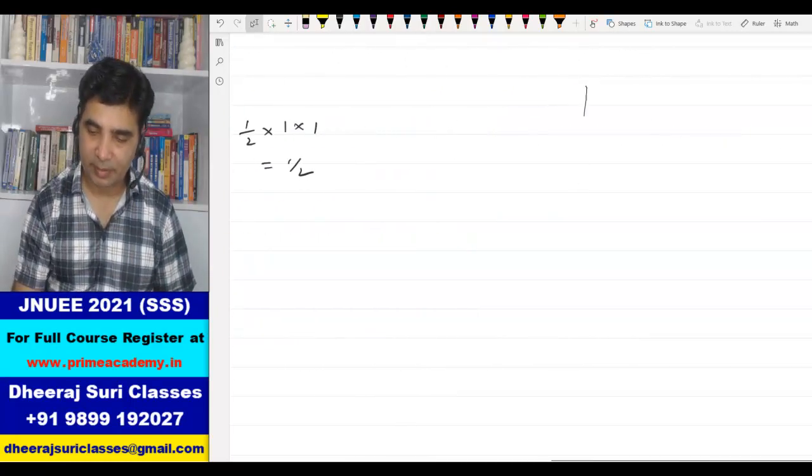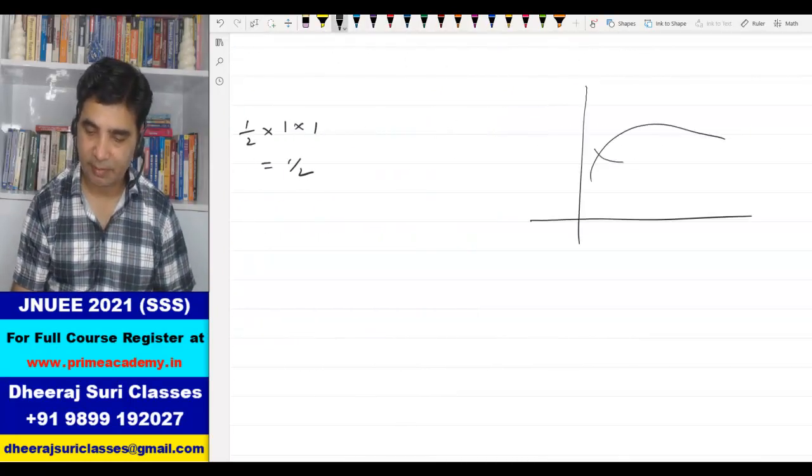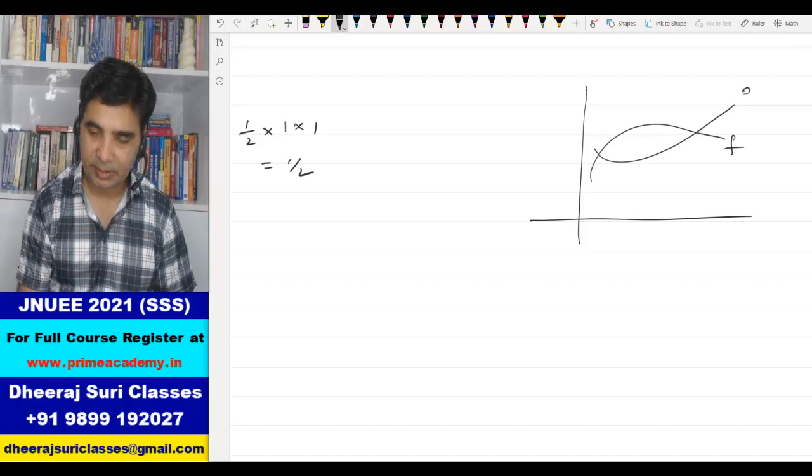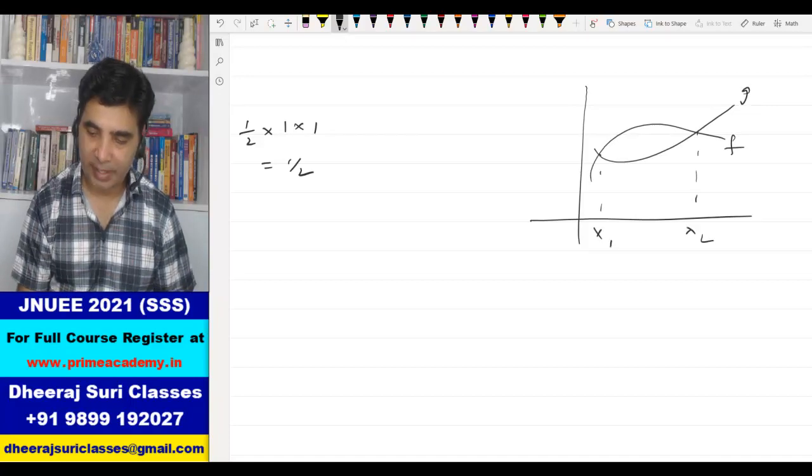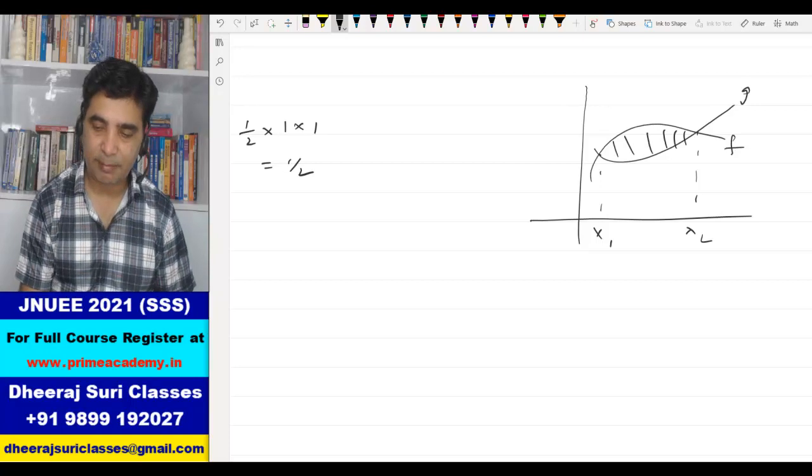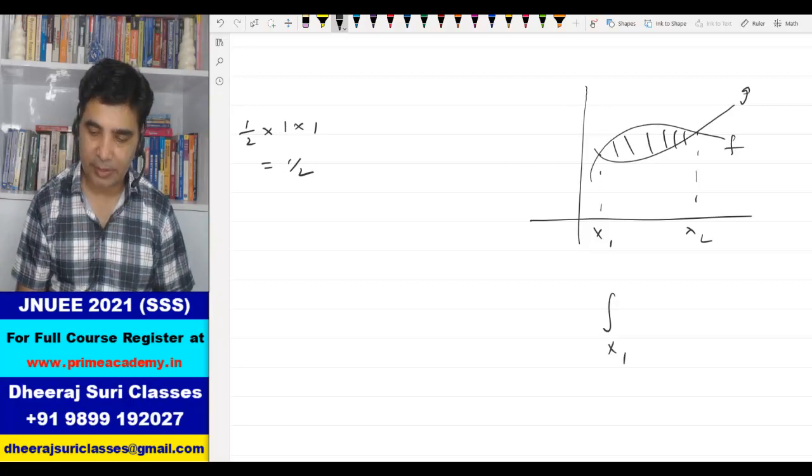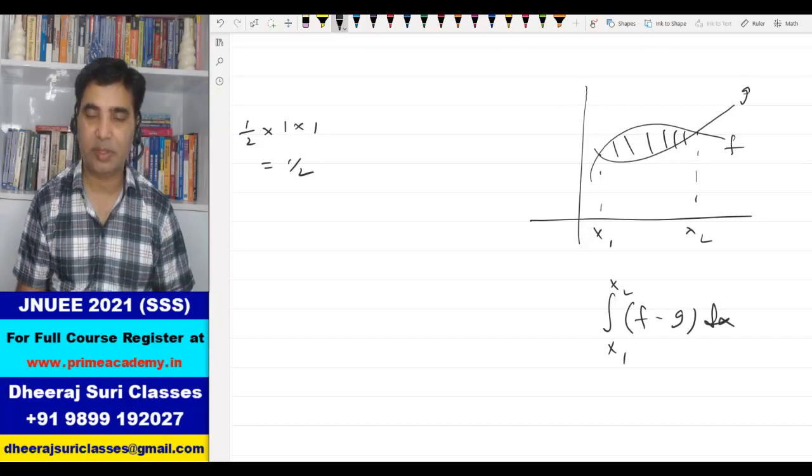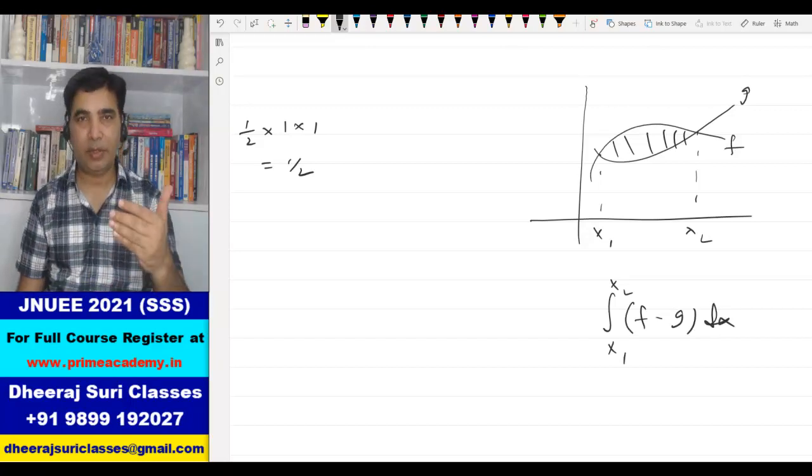Suppose we have a system like this. We have this function F and this function G, this is X1, this is X2. Between X1 and X2, if I have to find the region between these two curves, we integrate X1 to X2, F minus G with respect to X, so this gives you the region between two curves.